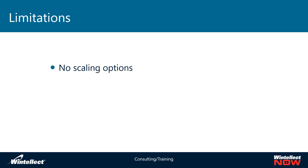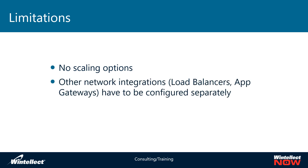If you need that kind of scaling, you can go with something like Azure App Services or stand up Azure Kubernetes Services, which we'll cover in videos later. A second limitation is that other network integrations — such as load balancers and application gateways — have to be configured separately. With Azure App Services, they have their own concepts of load balancers and application gateways baked into the platform, so you don't have to configure a load balancer manually — it automatically does that for you.